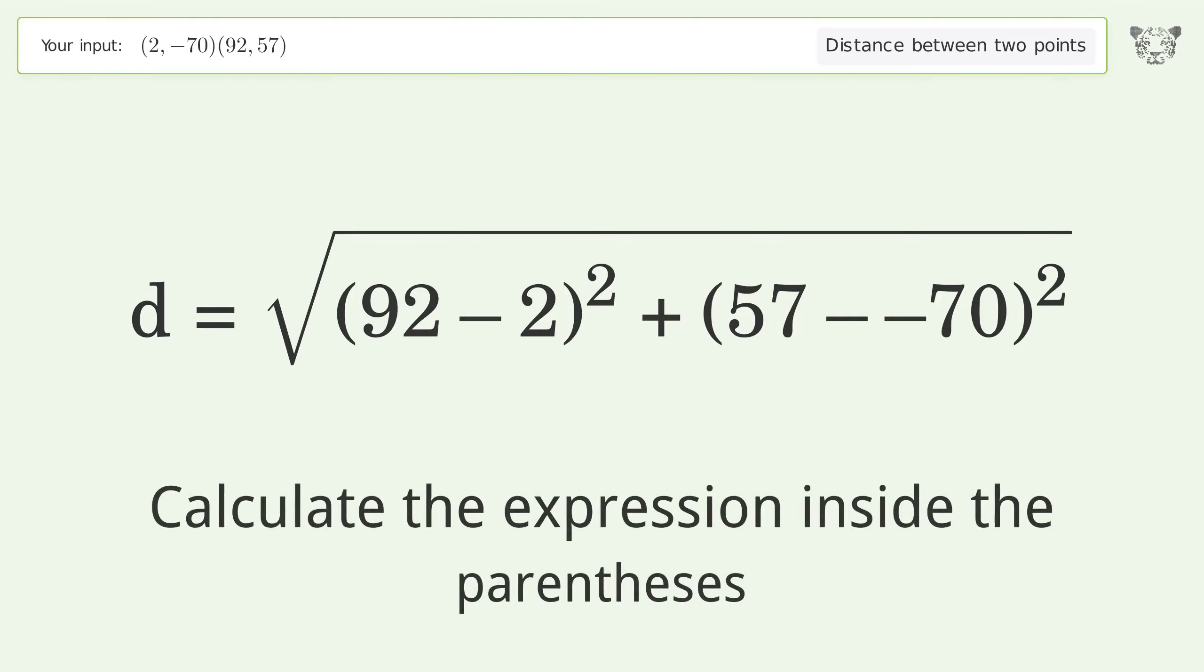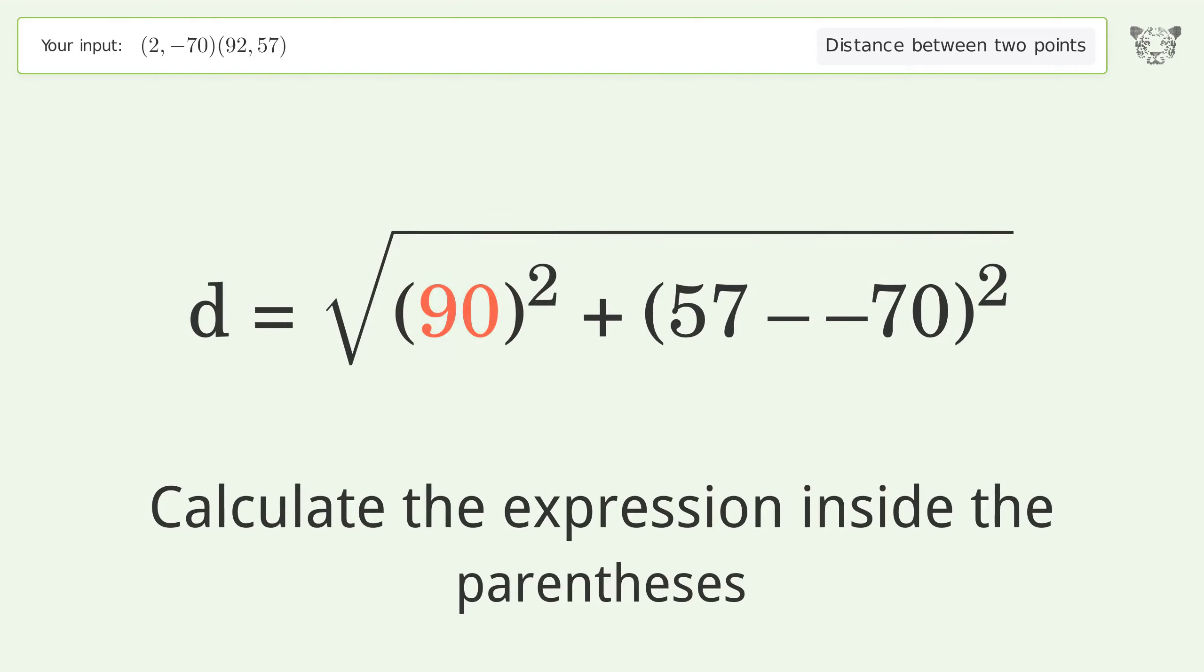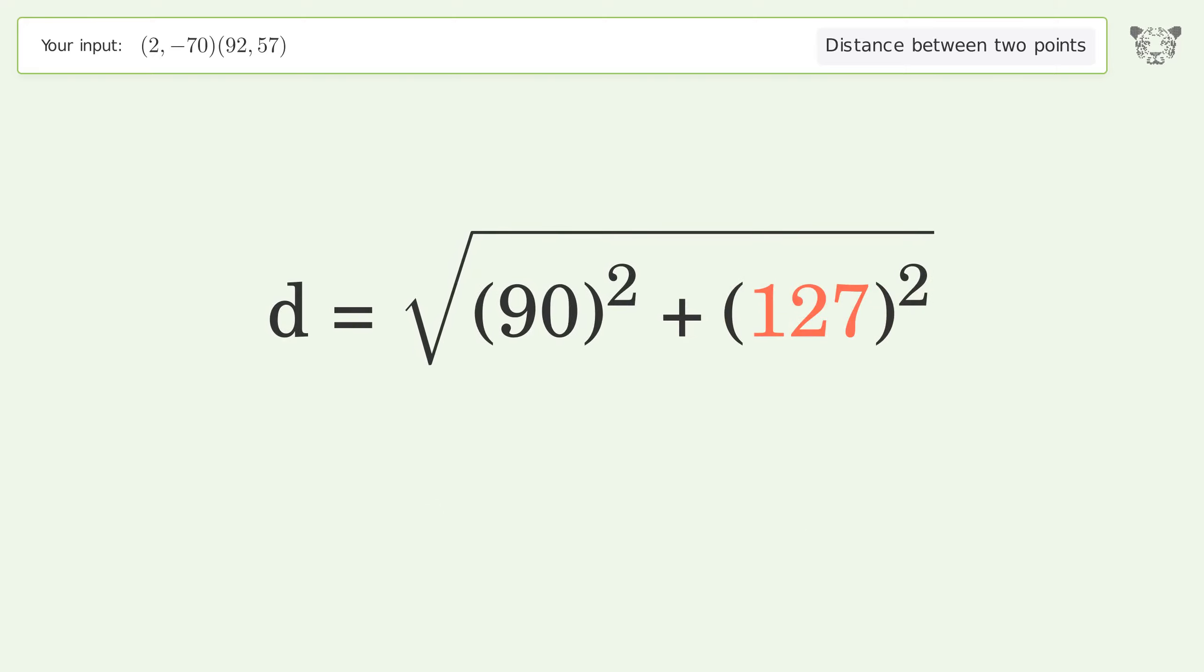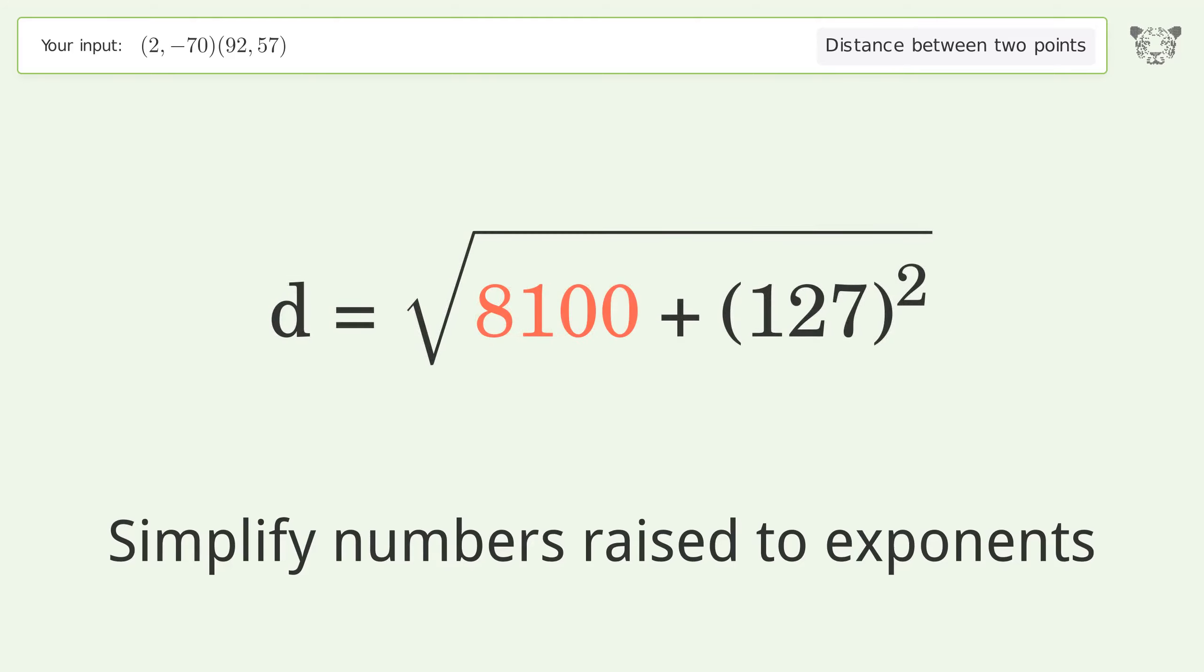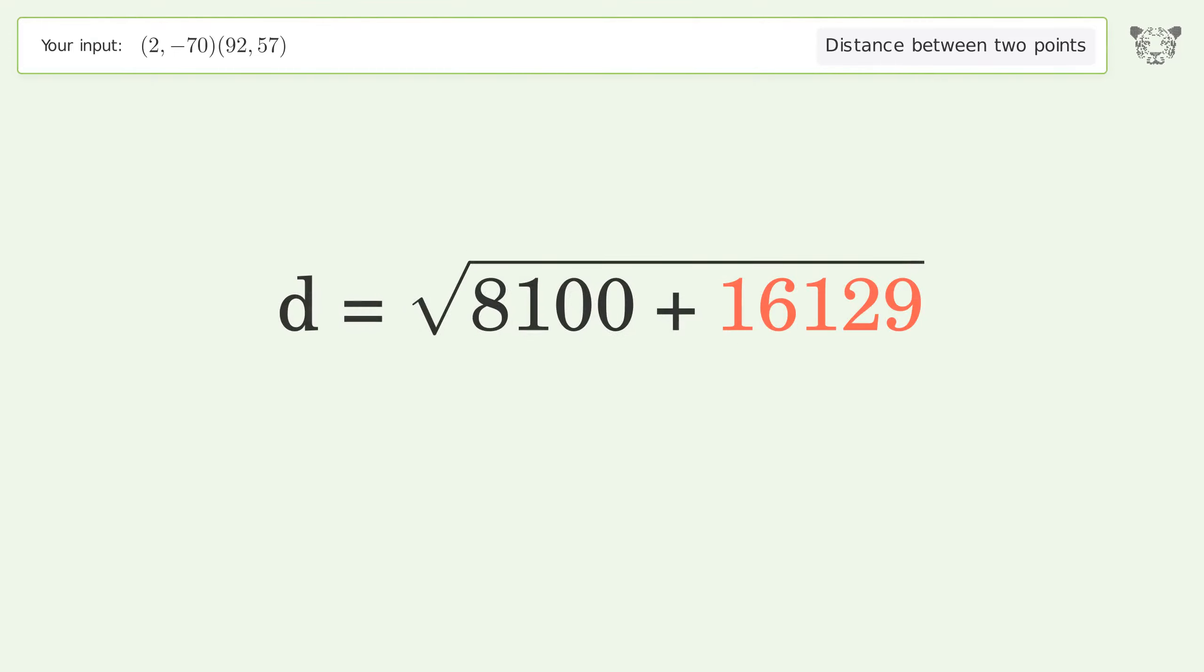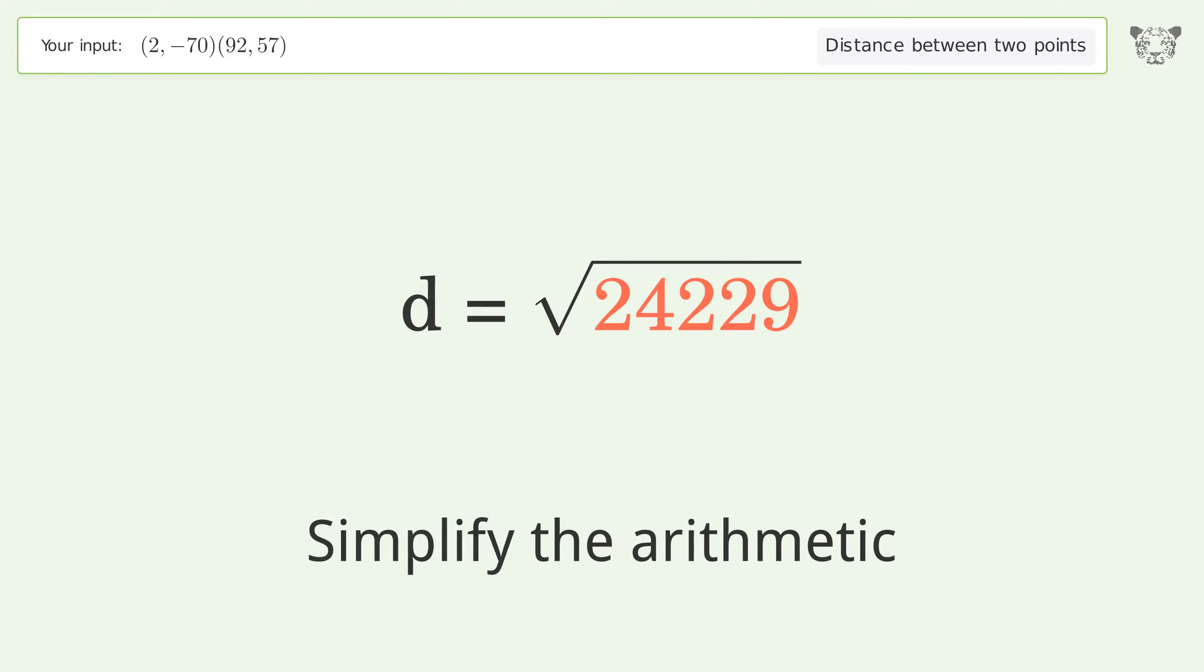Calculate the expression inside the parentheses. Simplify numbers raised to exponents. Simplify the arithmetic. And so the distance between the two points is the square root of 24229, or 155.657.